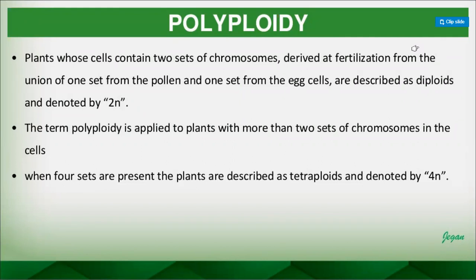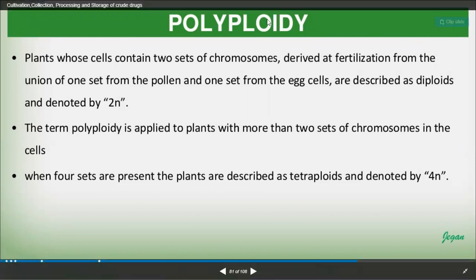The first technique is polyploidy. Plants whose cells contain two sets of chromosomes — one set derived from the pollen and one set from the egg cell at fertilization — are described as diploids, denoted by 2n.